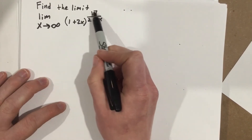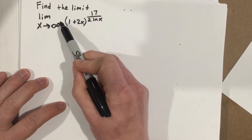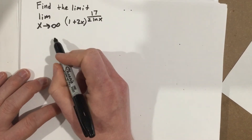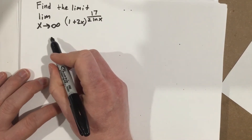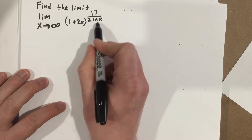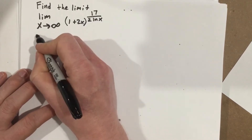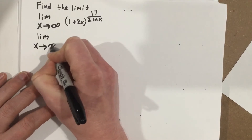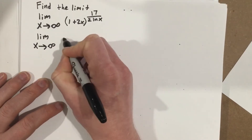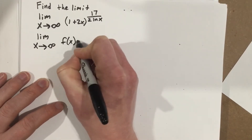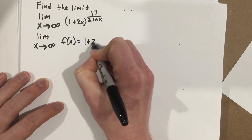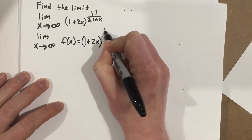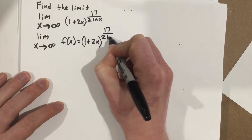I need to get this power up front. I'm going to do like I did in the previous problem — use natural logarithms to get that exponent to the front. So, I start by writing: limit as x approaches infinity of f of x equals one plus two x to the 17 over two natural log x.